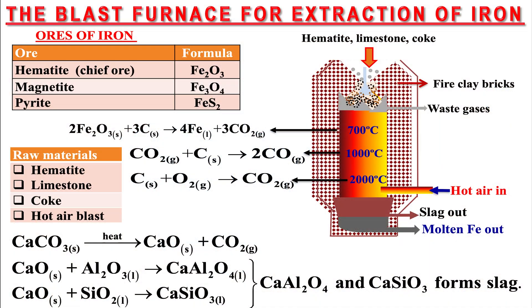The process involved in the extraction of iron, lead, and zinc is almost the same, so I'm going to discuss the extraction of iron. We start by looking at the ores from which iron is extracted. One of the chief ores is called hematite, which is Fe₂O₃. You can see the formulas on the screen. The other ore is magnetite, which is Fe₃O₄, and then there's pyrite, which is iron sulfide. The chief ore we will use in our discussion today is hematite.